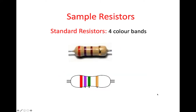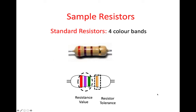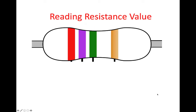Looking at the standard resistors — again, four colour bands. We have a diagram here and a photo above it. We've talked a little bit about the tolerance band, but the three bands to the left represent the resistance value. The tolerance is the band over on the right-hand side. So how do we read them? We've talked a little bit about the tolerance of the resistor.